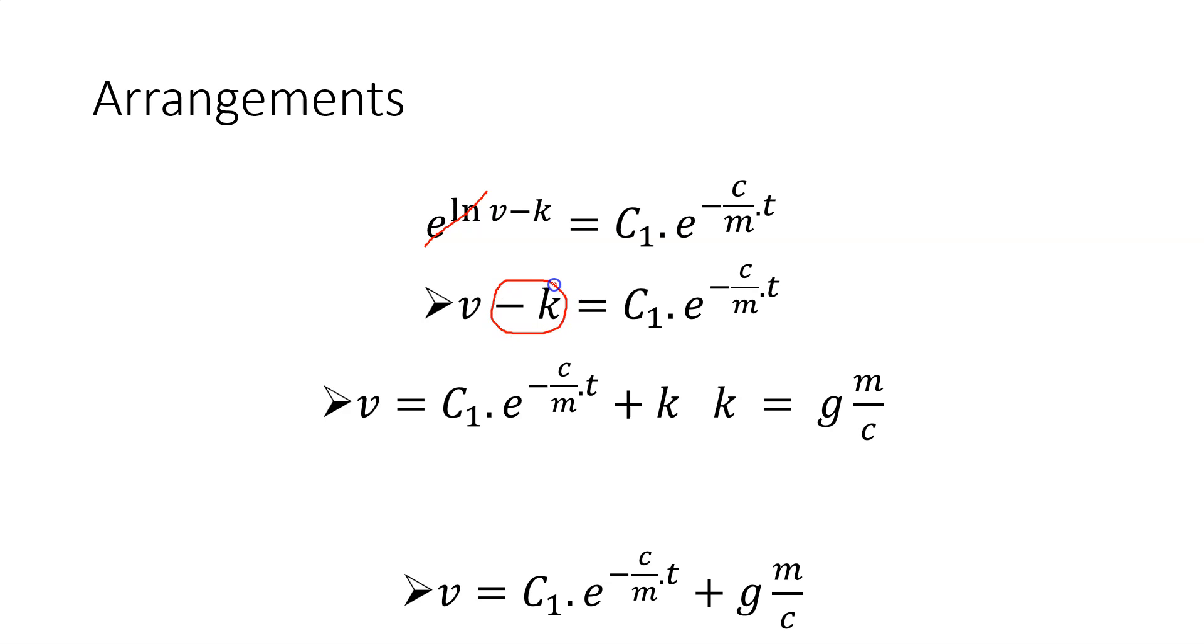Now, I can take the k to the right side to get v alone. V is equal to C_1 times e^(-c/m*t) plus k. And if you remember from previous pages, we have written k as g times m divided by c. If I place that here now, our final form up to now is v equals C_1 times e^(-c/m*t) plus g times m divided by c.